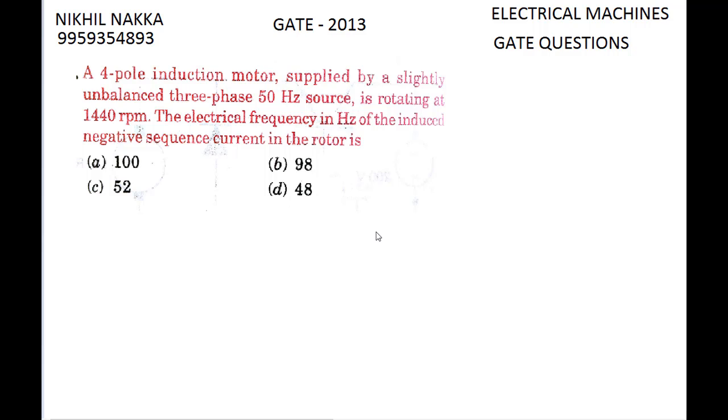Hello friends, welcome to the new video on GATE questions based on electrical machines. Today let's discuss a GATE 2013 question on induction motors. The question is: A four-pole induction motor supplied by a slightly unbalanced three-phase 50 Hertz source is rotating at 1440 rpm.